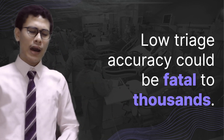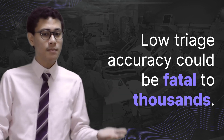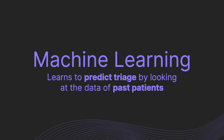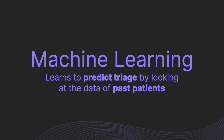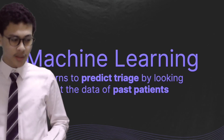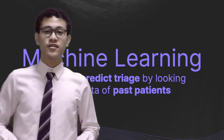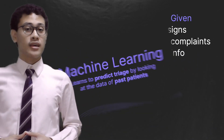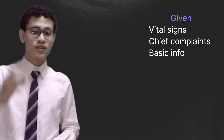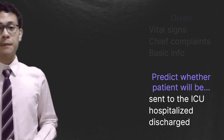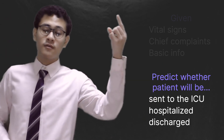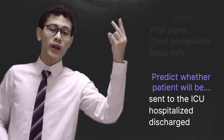Now, how exactly do we remedy this problem? Well, we can use a machine learning algorithm, which we can teach to predict triage based on the data of past patients. What we want to do is to make an algorithm that, given a patient's vital signs, chief complaints and basic info such as age, predicts whether or not a patient would be sent to the ICU, to be sent to another hospital ward, or to be discharged.